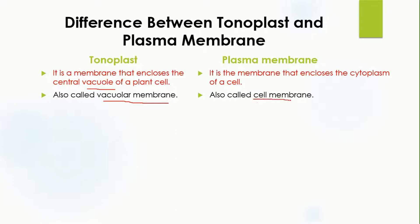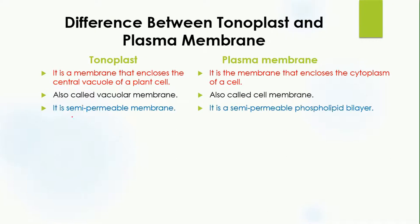The plasma membrane is also known as cell membrane because it encloses the cell. Another difference is that the tonoplast is a semi-permeable membrane, allowing some molecules to pass through it, while the plasma membrane is a semi-permeable phospholipid bilayer — it is also semi-permeable, meaning some molecules can pass through and some cannot.